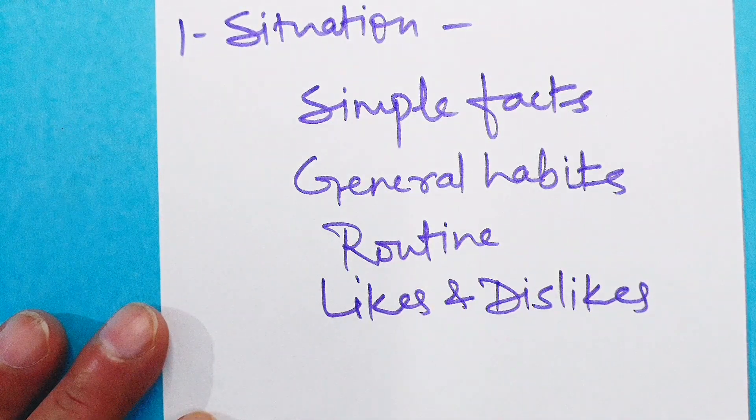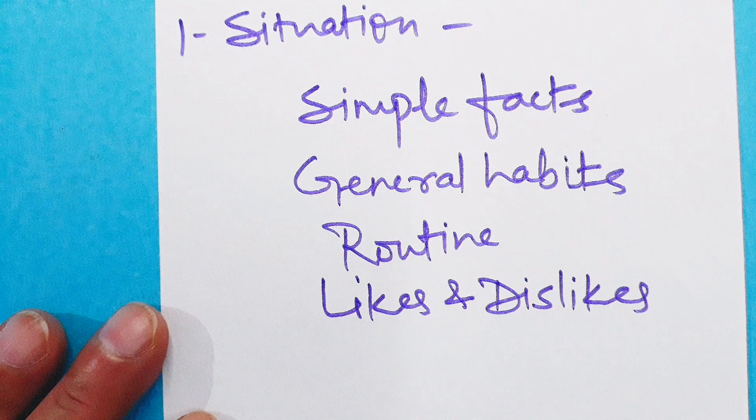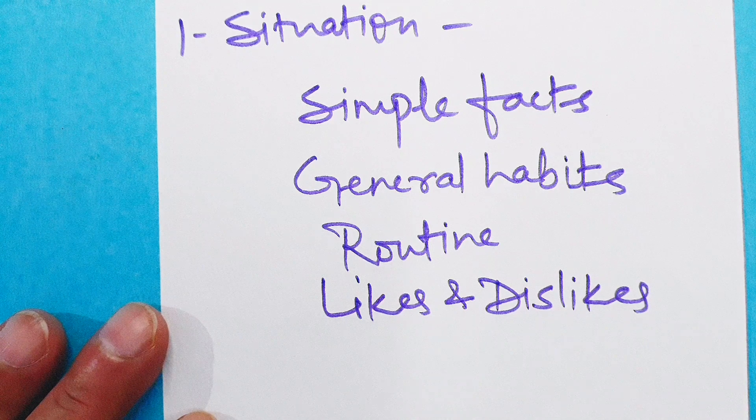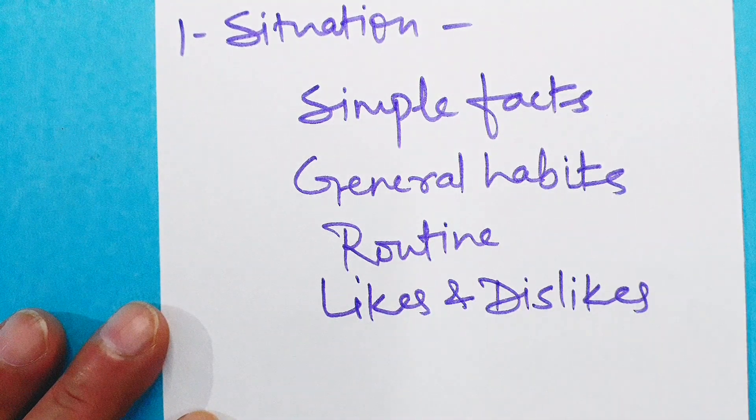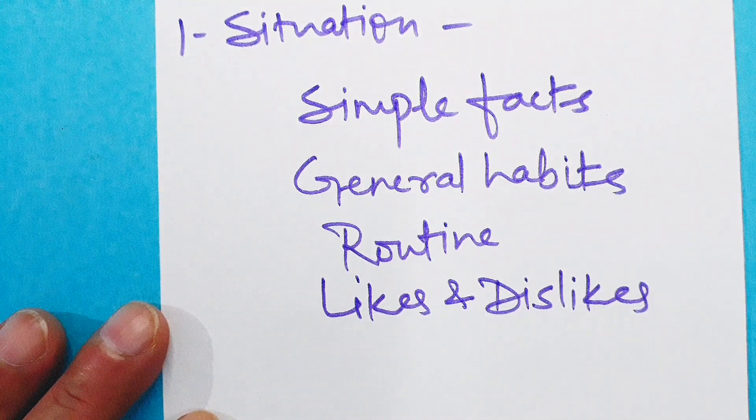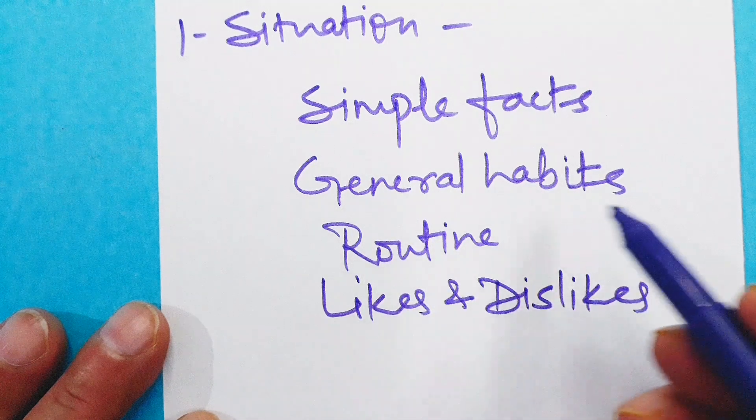Let's check a few examples. Two and two make four. The sun rises in the east. These are simple facts. Now general habits: He plays cricket. He watches TV in the evenings. These are general habits.